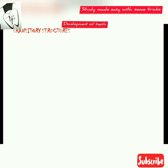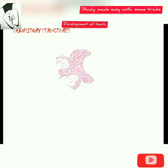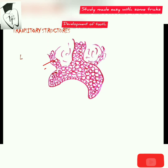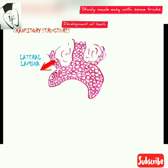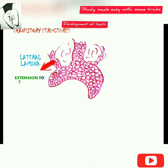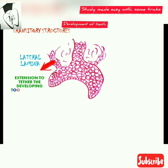Now we'll discuss the transitory structures. The first is the lateral lamina: as the tooth bud grows larger, the developing tooth is connected to the dental lamina by an extension called the lateral lamina.